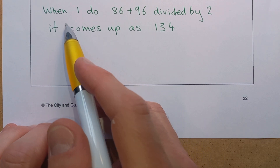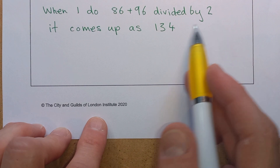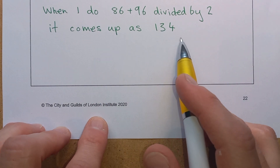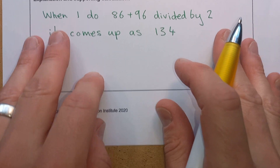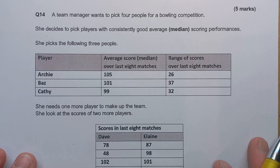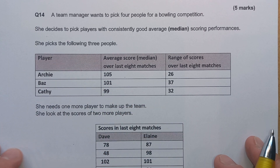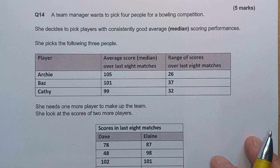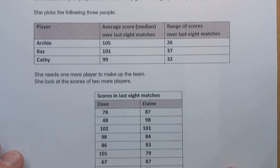The actual question I got was: when I do 86 plus 96 divided by 2, it comes up as 134. To give a bit of context, the question they were talking about was question 14 from the Sitcom Gills sample paper 2, level 2, in the calculator section. Essentially what they were trying to do was work out the median of a set of numbers.